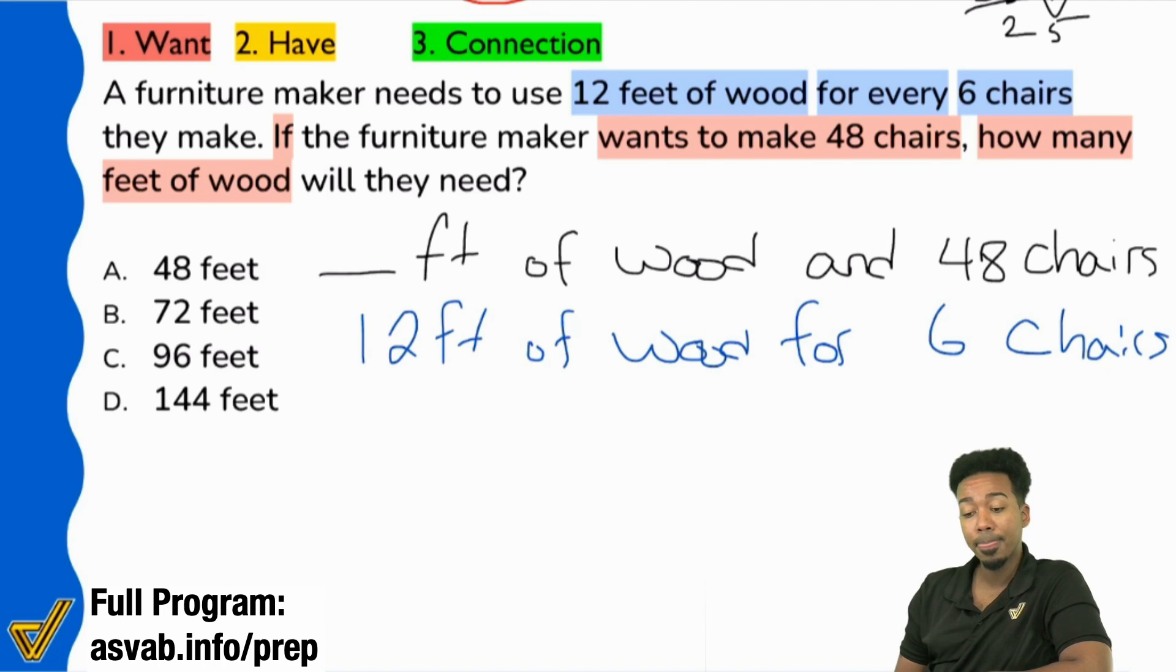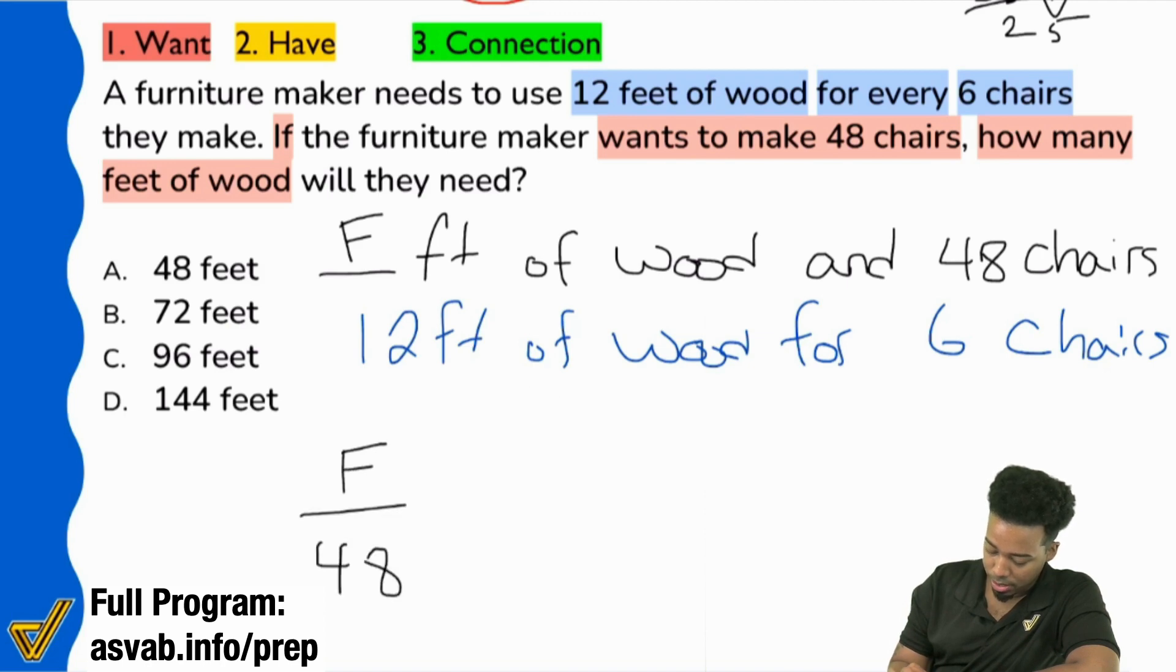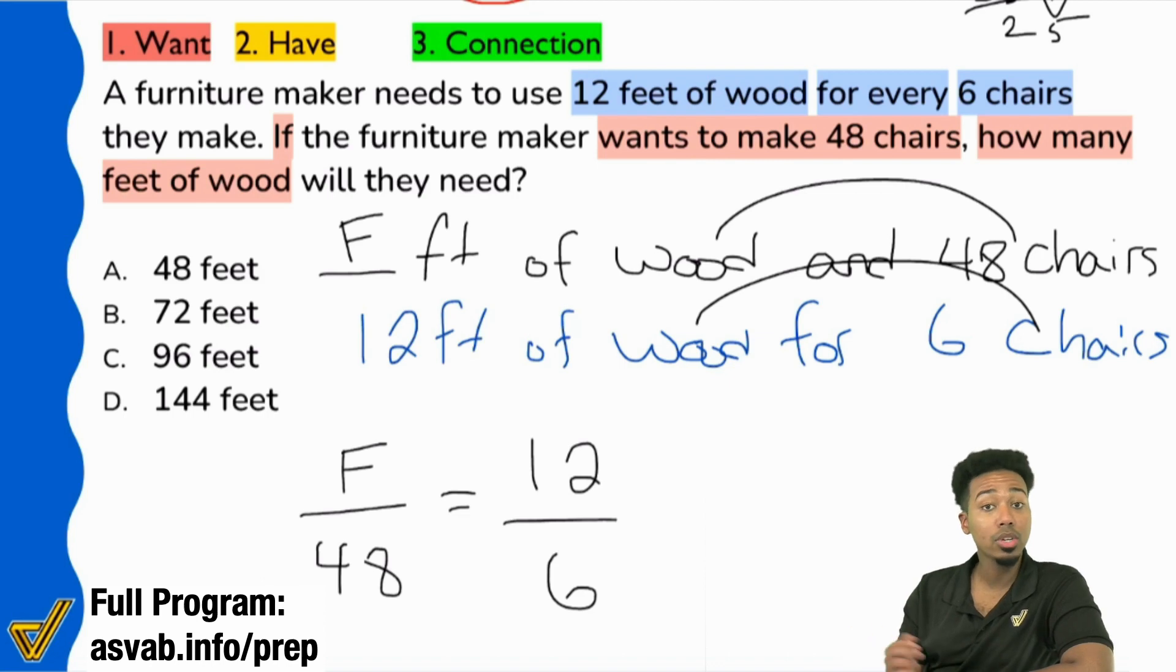Do we even need to set up a proportion to solve this problem or could we just compare in the same way? We can compare pretty quickly and be done. There's actually two ways to do this. First you can go ahead and notice that I can go from 6 to 12. So let me show the proportion. I'm going to say f feet of wood over 48 and you got that equal in the same way. So wood to chairs, wood to chairs. So I'll do 12 over 6.